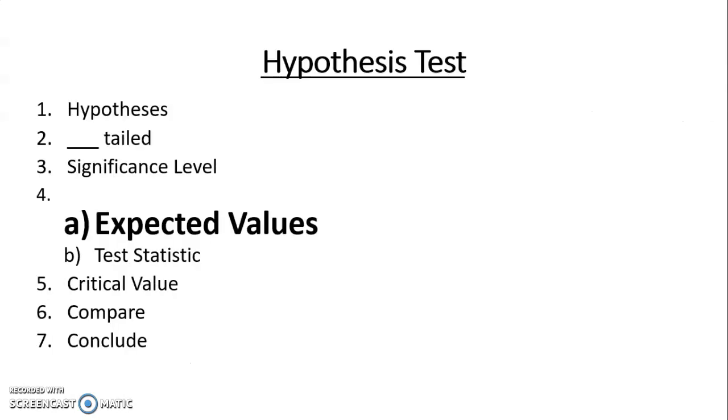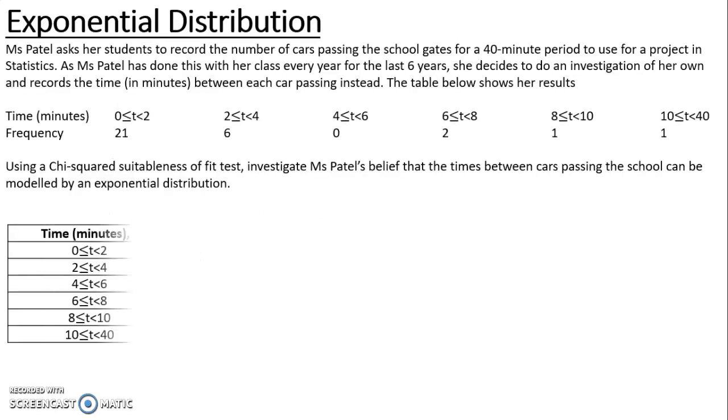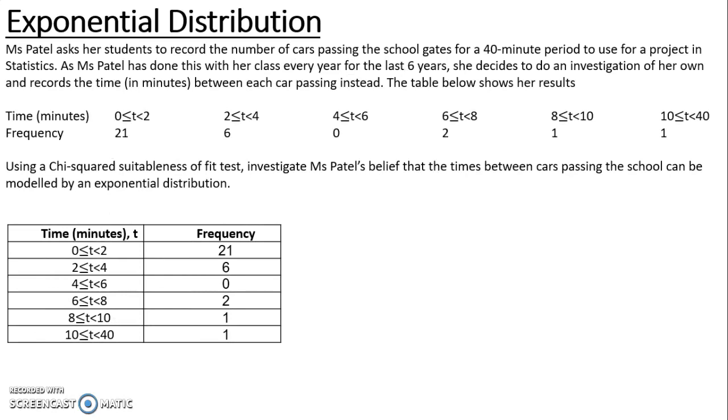To work out our test statistic we need our expected values. This is what is slightly different to a goodness of fit test without estimation of parameters. If I just rearrange my data to look a little neater, to be able to work out my expected values I need to know the probability using the said distribution. So using an exponential distribution I need the parameter lambda. It has not been given in this question, so I need to use an estimation for lambda.